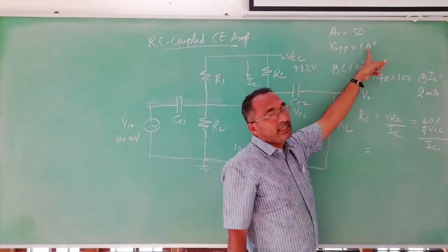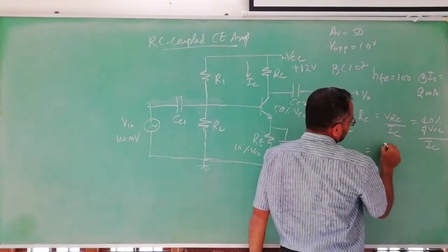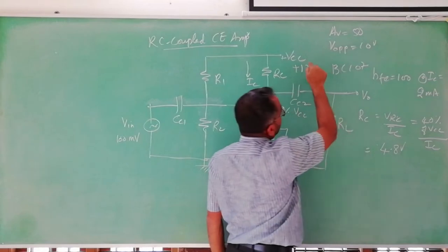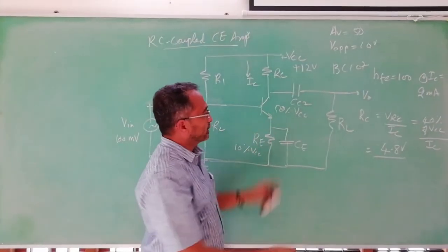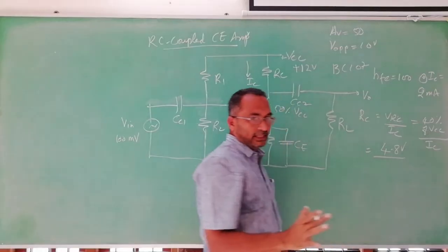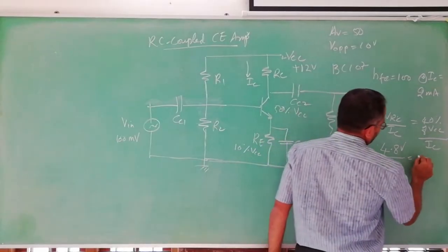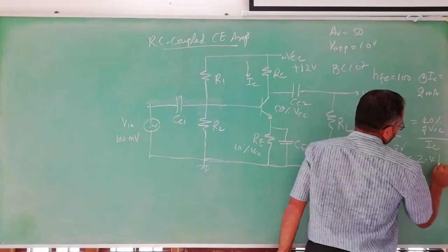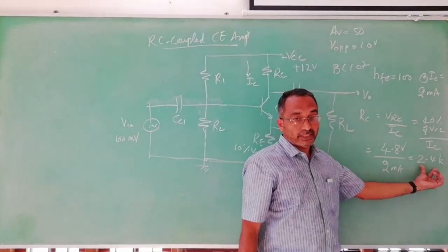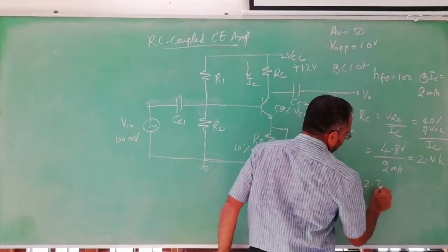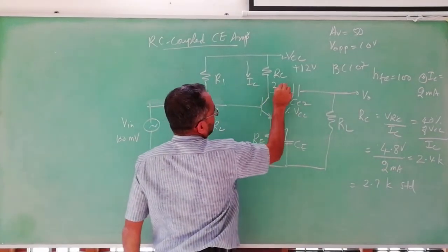So now this 40% VCC is nothing but 4.8V, 12V into 0.4. IC is nothing but 2mA because we assume IC is 2mA because HFE is guaranteed by that. So the resistance is 2.4K. We know there is no resistor available of this value 2.4K, so we will take 2.2K or 2.7K standard. So RC is 2.7K, we decided, we designed RC.